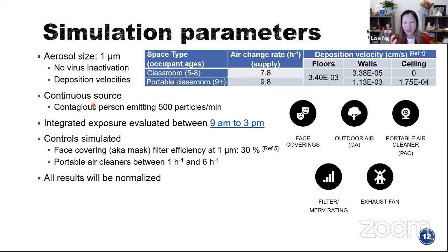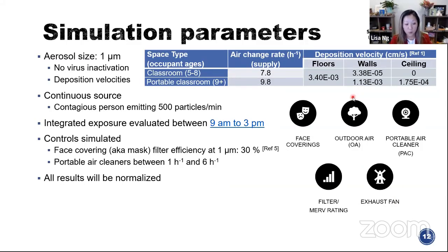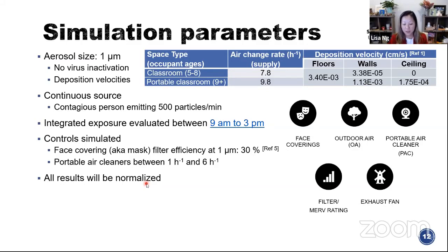When I say face covering, I mean mask — not necessarily a surgical mask or N95, but one you could buy or make at home. We also looked at portable air cleaners ranging from one to six air changes, as well as filters, exhaust fans, and changing outdoor air when appropriate. All results are normalized — either to another type of HVAC system or its own HVAC system — to emphasize that we're not reporting absolute numbers, because absolute numbers don't mean anything without scientific data on infectious dose. We're looking at normalized reduction in exposure.